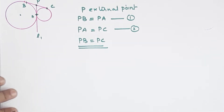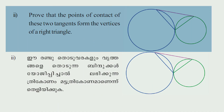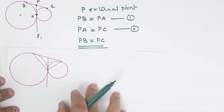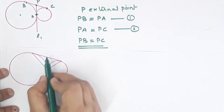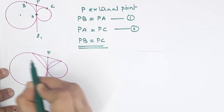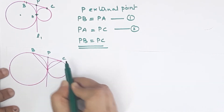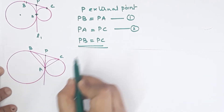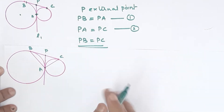That completes the first proof. For the second proof: prove that the point of contact of two tangents from the vertices of a right triangle — we need to prove PB equals PC.